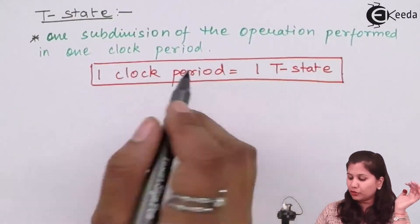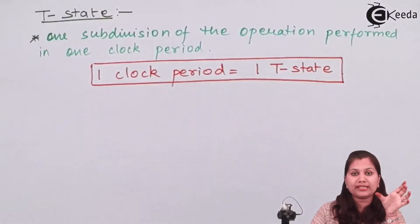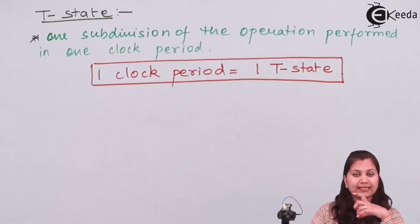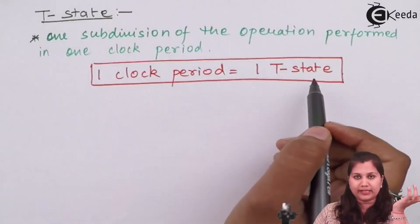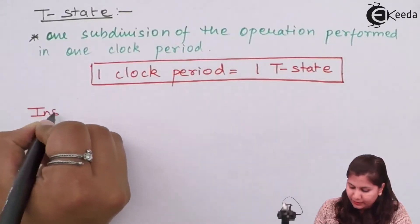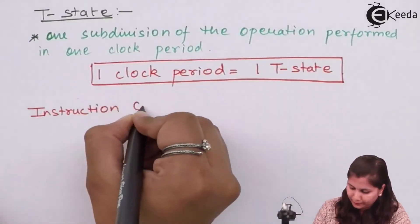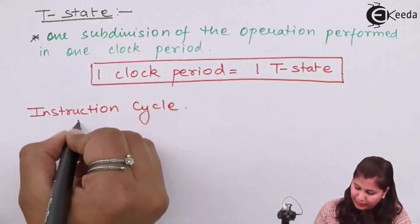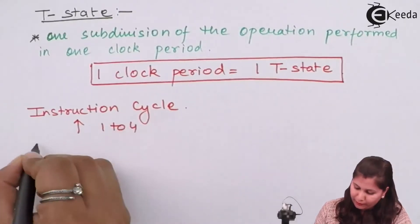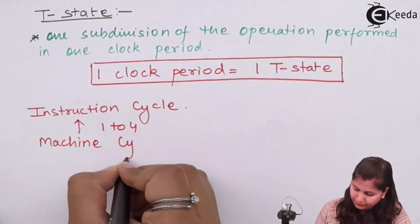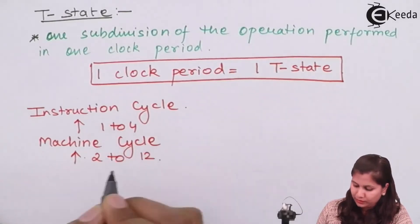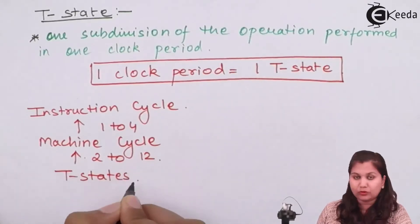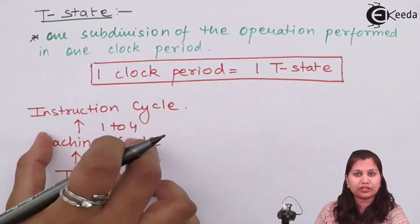In place of clock period we can also use T-state. Each machine cycle has six states, and each state consists of two oscillator clock periods, so each state of the machine cycle consists of two T-states. In the instruction cycle we will have one to four machine cycles, and in each machine cycle we can have two to twelve T-states.